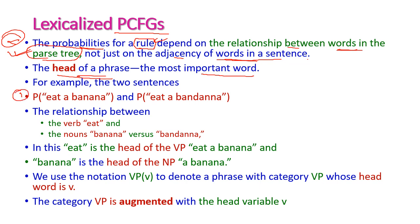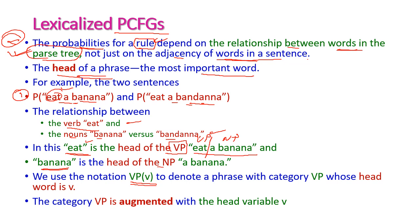For example, consider the phrases 'eat a banana' and 'eat a bandana'. Here banana and bandana are nouns, and eat is a verb. Eat is the head word of the verb phrase 'eat a banana'. The phrase can be divided into a verb phrase and a noun phrase. In the verb phrase, eat is the head word; in the noun phrase, banana is the head word. The category VP is augmented with the head verb v, written as VP(v), where small v is the head word.